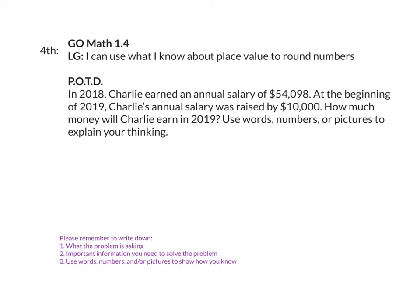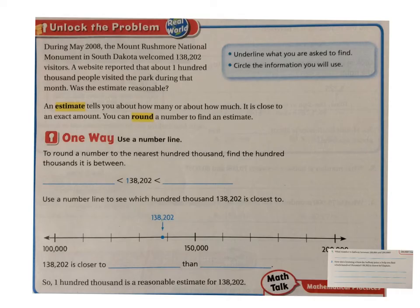You should have talked about the problem of the day with your substitute today, so let's move on to today's lesson. If we look at the unlock the problem part, it says: during May 2008, the Mount Rushmore National Monument in South Dakota welcomed 138,202 visitors. A website reported that about 100,000 people visited the park during that month. Was the estimate reasonable?